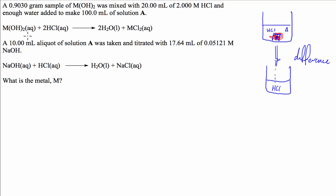What we then do is we take an aliquot of this solution, which has been reacted with the sample, and titrate it against sodium hydroxide. So we have sodium hydroxide in the burette, and we use this to work out how much hydrochloric acid is remaining after the reaction. The question asks: what is the metal M?